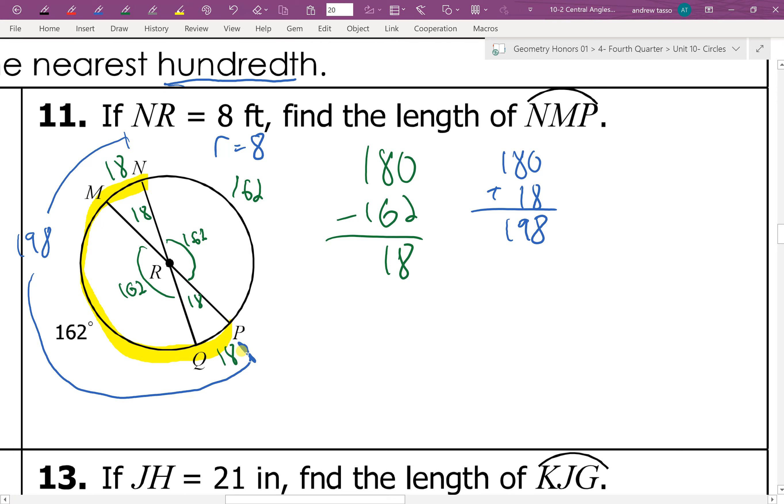we can now set up our formula. So the formula is that L equals x over 360 times 2 pi r. So in our case, it will be 198 over 360 times by 2 pi, and the radius is 8.